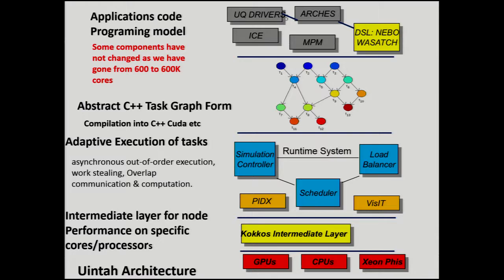The key thing we have is an applications code layer that sits on top of a general programming model and generates a task graph, which we compile and then execute in an adaptive fashion, with a simulation controller, scheduler, load balance, and so on. We use Valerio Piscucci's PIDX approach for I/O and Visit for visualization. The COCOS intermediate layer offers a way of dealing with legacy code and automatically mapping it onto GPUs, CPUs, and Xeon Phis. The layered approach is important because some application components haven't changed as we've gone from 600 to 600,000 cores.